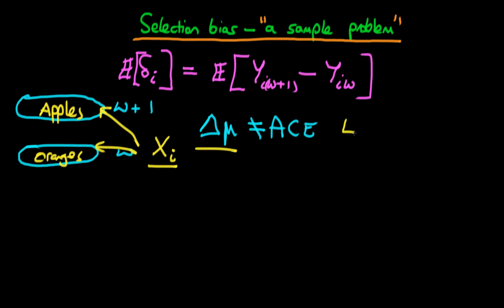We've seen in the last video how we can use linear regression as a means to allow us, at least conditionally, to evaluate the average causal effect. Conditional on Xᵢ, in certain circumstances linear regression allows us to evaluate the average causal effect. So that's one solution to the selection bias problem — to include this list of covariates in your regression and sort of hope for the best. But there are other ways, perhaps slightly better and slightly newer ways, of controlling for the selection bias problem.